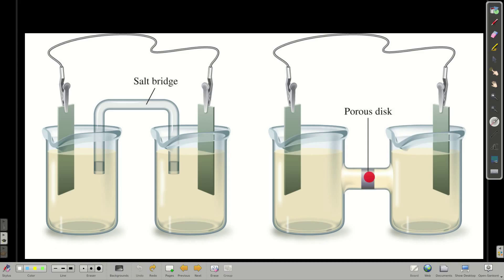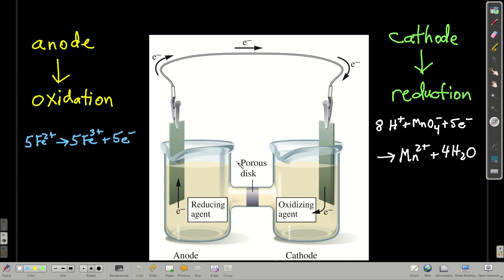A porous disk works basically the same way. It's just like a disk that will allow ions to float through, but doesn't allow anything else to go. So that works pretty well. And so now let's look at what we have.